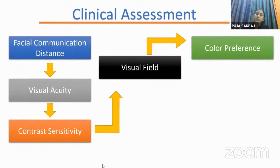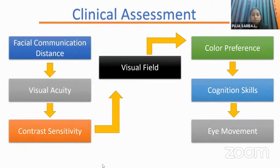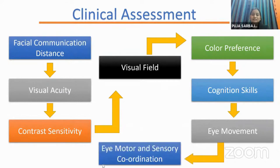For visual field assessment, we use the Lea flickering wand. For color preference, we use the Panel D-16 test. We also use the Lea Rod-Cone adaptation test, block color test, different cognition skill assessments, eye movement testing, and finally eye motor and sensory coordination. After these, we do retinal imaging — OCT.